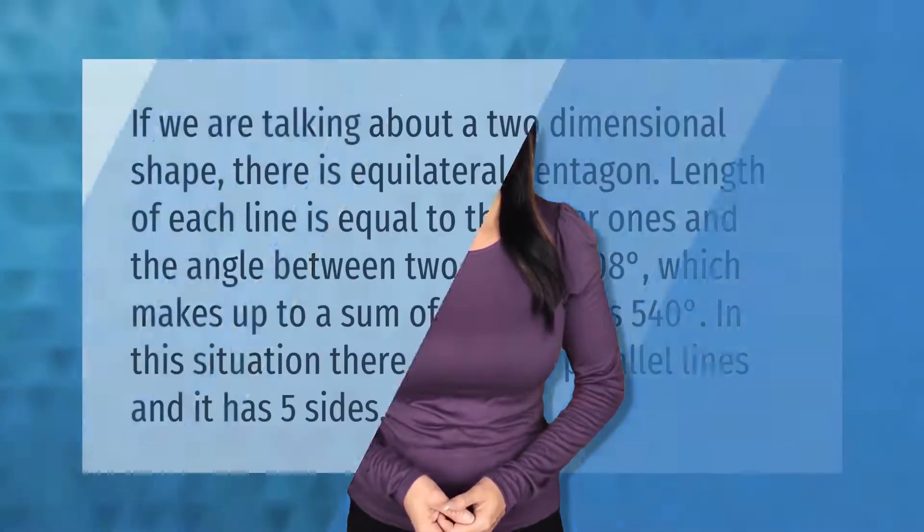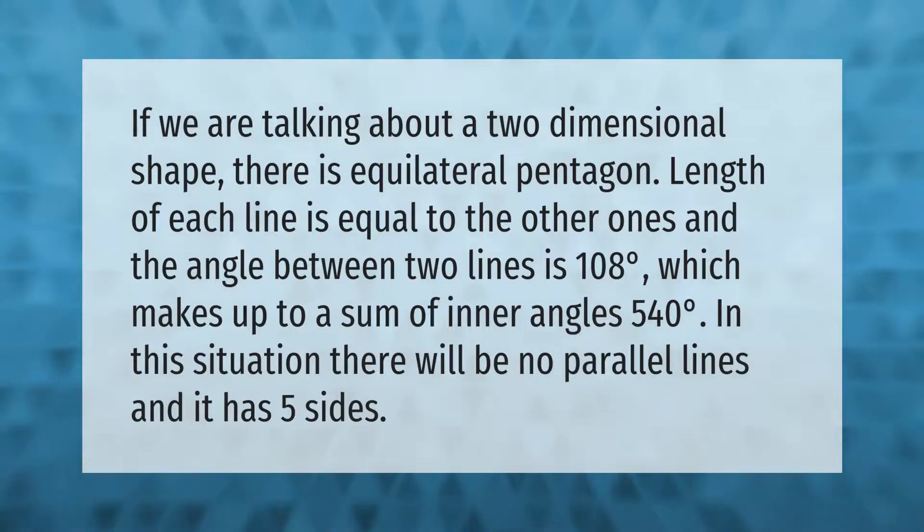If we are talking about a two-dimensional shape, there is an equilateral pentagon. Length of each line is equal to the other ones and the angle between two lines is 108°, which makes up to a sum of inner angles 540°. In this situation there will be no parallel lines and it has five sides.